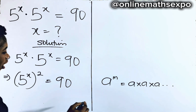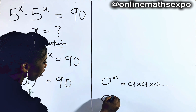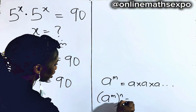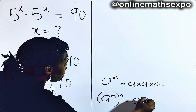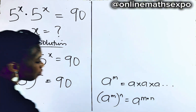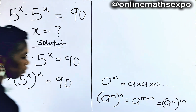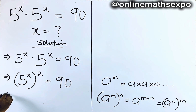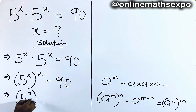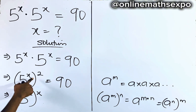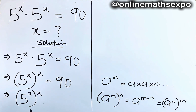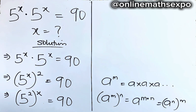Remember also that for every a to the power of m, raised to power n, it is a to the power of n multiplied by m, which is a to the power of n raised to power m. So applying it here, we are going to have 5 to the power of 2 raised to power x. This is equal to 90.